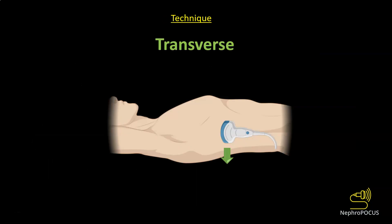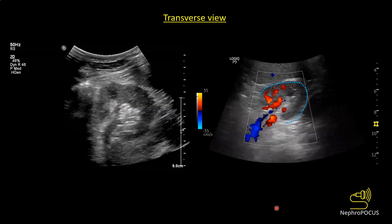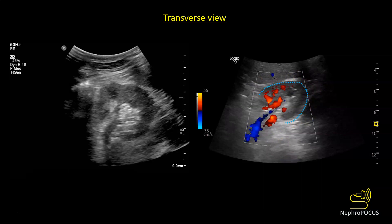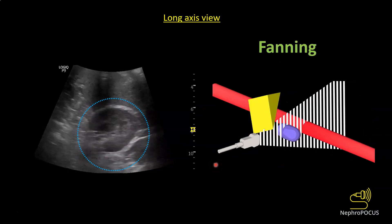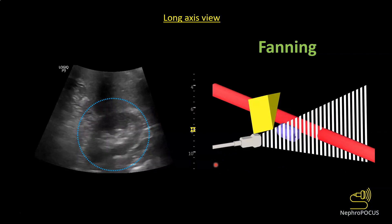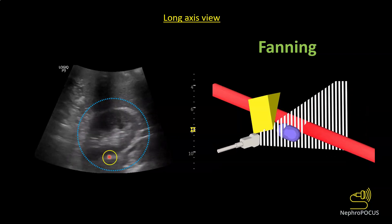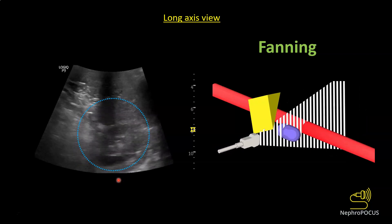After the long axis view, rotate the probe counterclockwise such that the probe orientation marker faces the patient's bed on the right side and faces anteriorly on the left side. Then you will get a short axis view of the kidney. Here is how the transverse view of the kidney looks in the middle or hilar part. In the hilum, structures are entering and leaving the kidney, so the kidney parenchyma appears C-shaped. Once you find the transverse view, fan the transducer superior-inferiorly to visualize the entire kidney. As you go towards the poles, the kidney becomes more rounded, and in the hilar region it is more C-shaped.